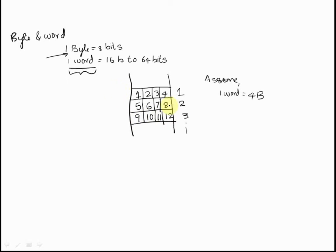In a byte addressable system the addresses are consecutive, but in a word addressable system the first word address is 1, the second word address is 5, and the third word address is 9. This is because the first word starts at byte 1, the second word starts at byte 5, and the third word starts at byte 9. In between two words there are 4 bytes, so we add the number of bytes per word to get each successive word location.